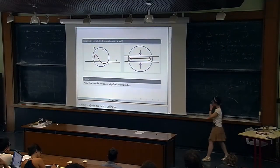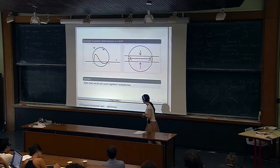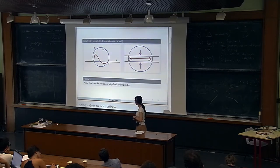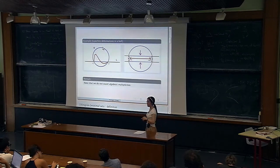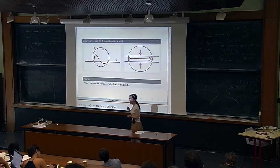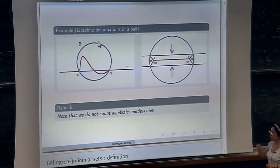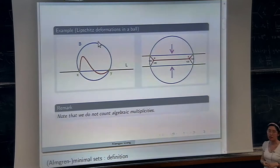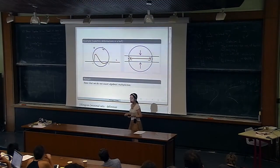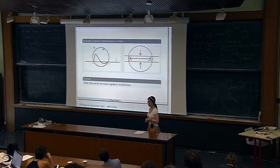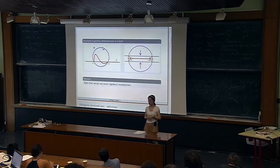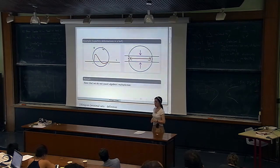Examples. The simplest case is that a line is a one-dimensional minimal set in R^n, because by definition each time you take a ball B and do a deformation inside it, the image should be some connected set connecting the endpoints X and Y — the intersection of B with the line. So its length is larger than the segment's length. Thus for any ball B and any deformation, we always get a larger measure for the deformation. So a line is a one-dimensional minimal set in R^n.